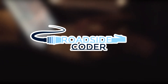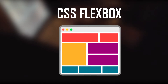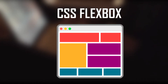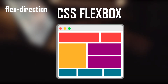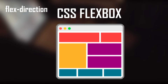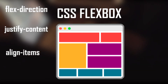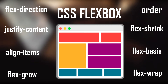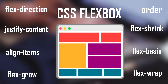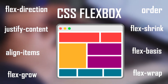Hey everyone, welcome back to Roadside Coder. Today we're going to learn CSS Flexbox in one single video, including properties such as flex-direction, which is used to control the flow of a container. We'll learn how to place contents using justify-content, align-items, and many more properties like flex-grow, order, flex-shrink, flex-basis, and flex-wrap. After learning CSS Flexbox, you'll be able to design your websites faster and in a more efficient way.